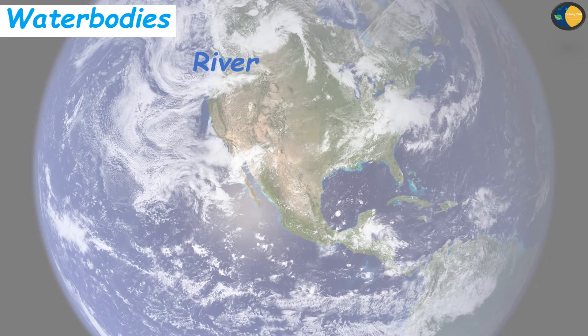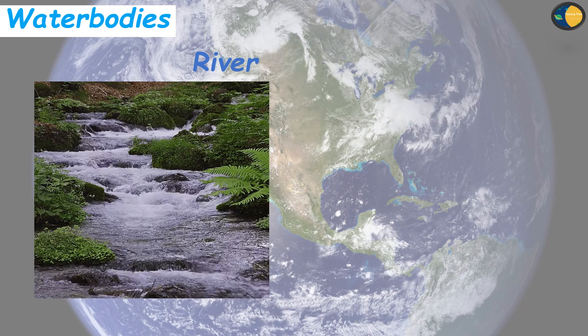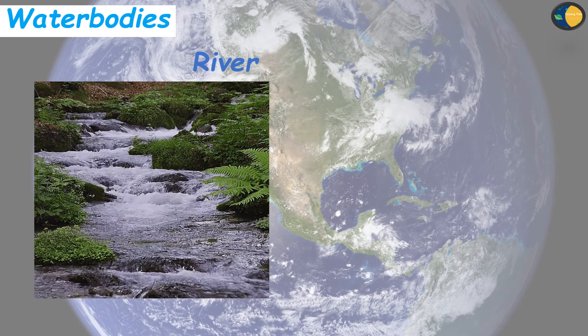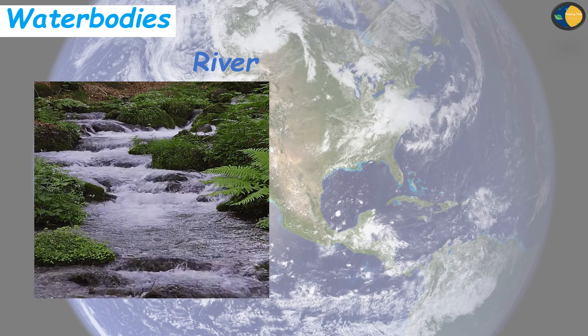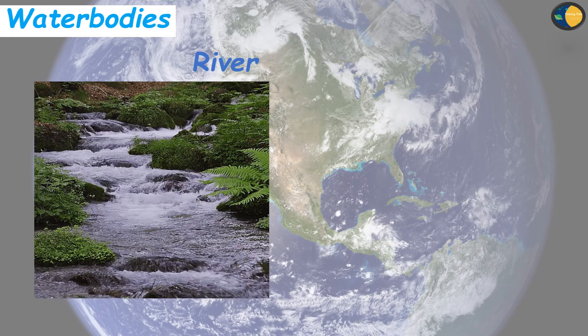A wide channel through which water flows continuously is called a river. The two sides of a river are called its banks. Most rivers have their origin in the mountains.